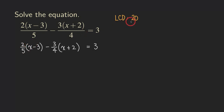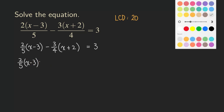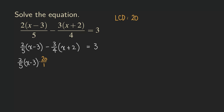We can turn 5 into 20 and we can turn 4 into 20 by multiplying those numbers by some numbers. Now let's multiply everything by 20. We copy down the equation — 2 over 5 times x minus 3 — and when we multiply by 20, we can write it as a fraction: 20 over 1. Next, we have minus 3 over 4 times x plus 2, and we are going to multiply by 20 over 1 again.